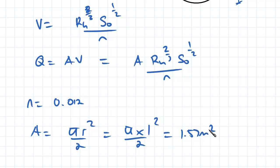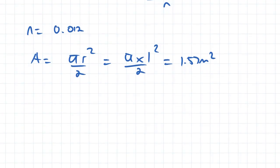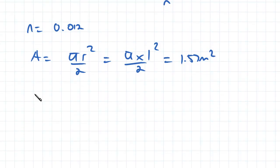The next thing we need to work out is our wetted perimeter. Our perimeter is going to be equal to pi over 2 multiplied by a diameter of 2.